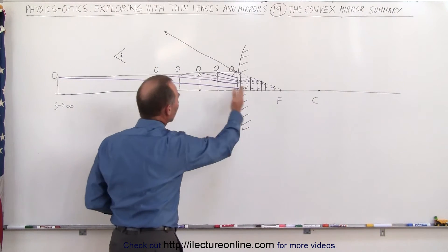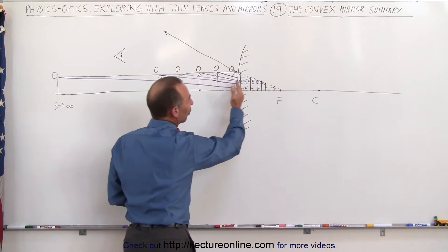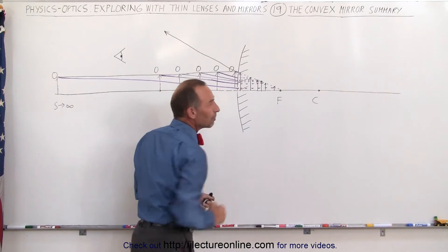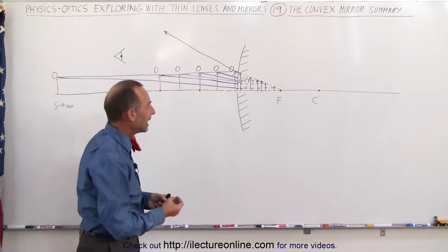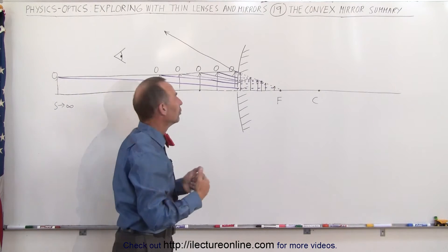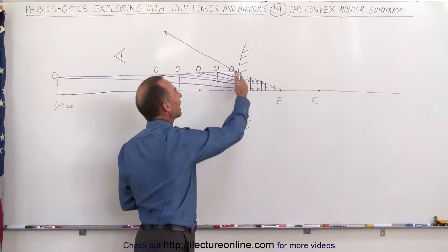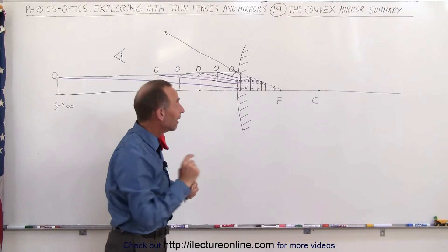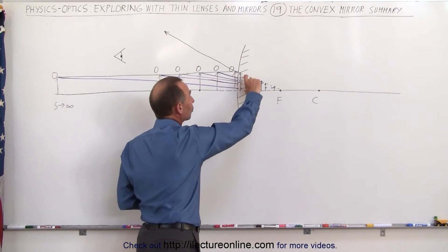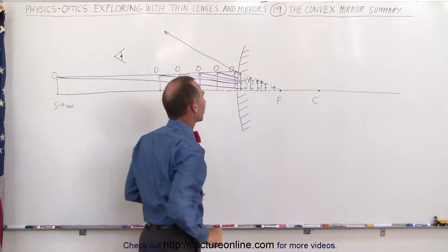You can see that no matter where we place the object, the image will always form somewhere behind the mirror, therefore we always get a virtual image. Notice that in every case we get an upright image and also in every case the image size will be smaller than the object size.